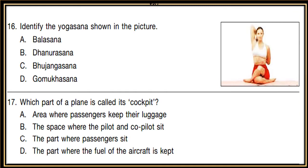Question 16: Identify the yoga asana shown in the picture. Options are: Balasana, Dhanurasana, Bhujangasana, or Gomukhasana. One should have good knowledge of yoga asanas because they are asked in all classes in the GK paper.